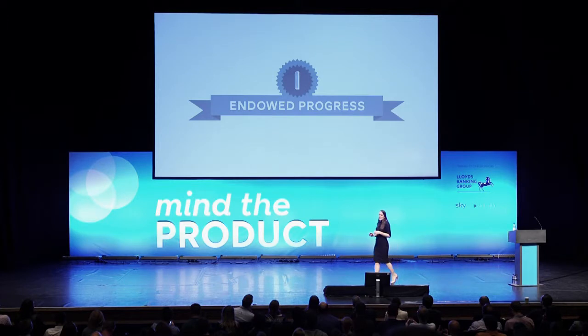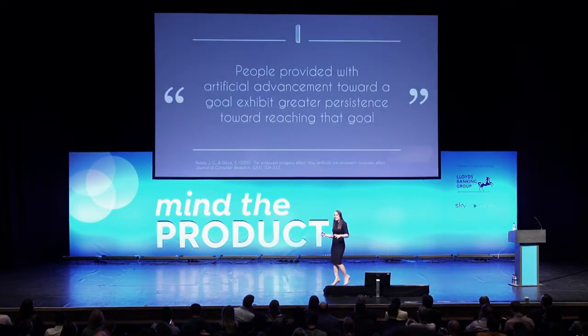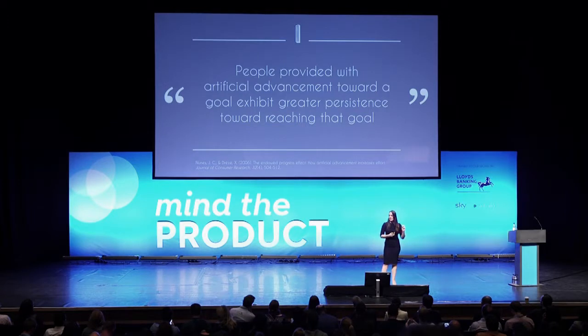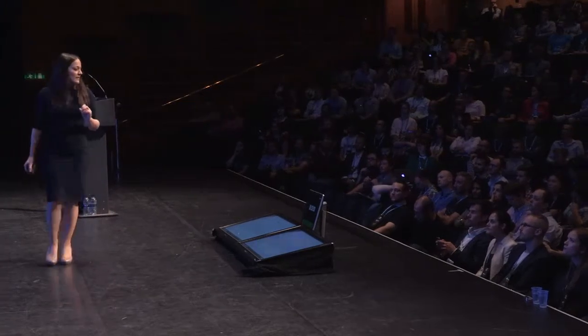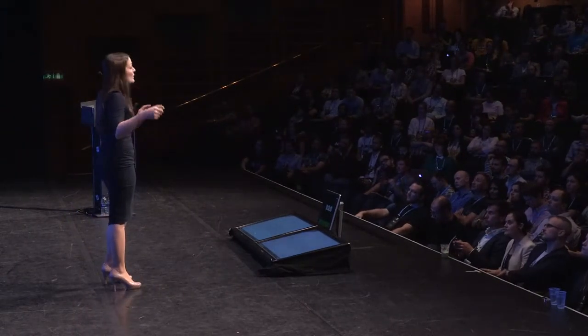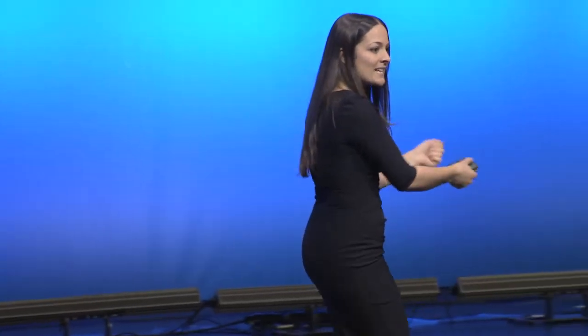So how does it work? Endowed progress is essentially the situation where people provided with artificial advancement toward a goal exhibit greater persistence — they're much more likely to work harder towards reaching that goal. We're naturally motivated to complete tasks that we've started, and once we've got that original intention, whether you've taken the intention to start or whether someone gives you the intention, you're much more likely to run with it and stay consistent with that original incentive.